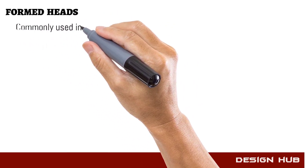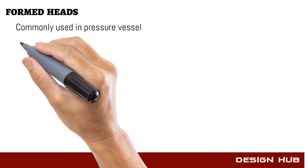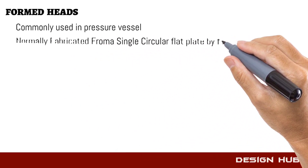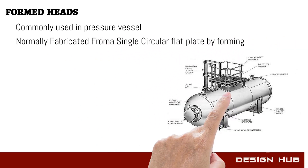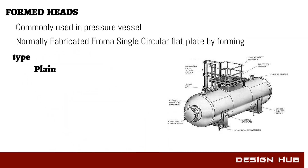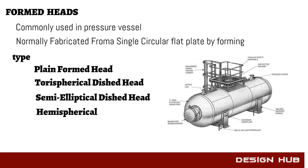Formed heads are basically used in pressure vessels. This type of head is manufactured by a single circular disc. Formed heads are of different types: plain formed head, torospherical dished head, semi-elliptical head, hemispherical head, and cone-type head.